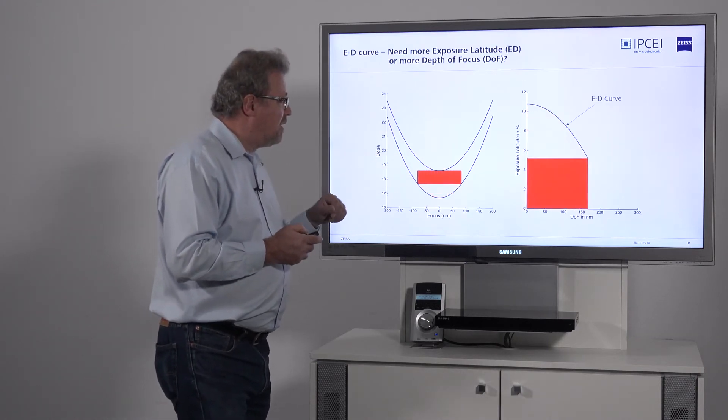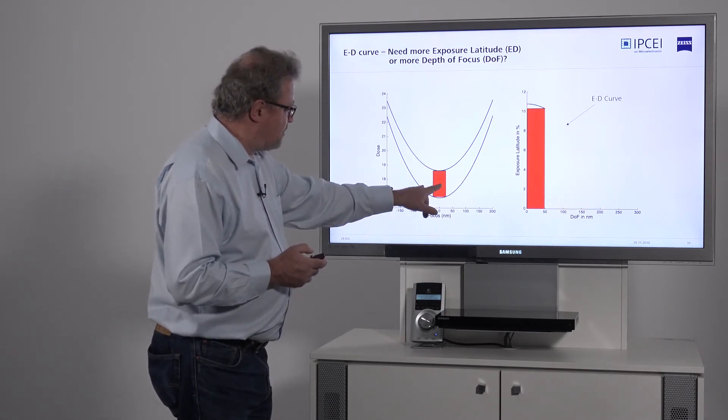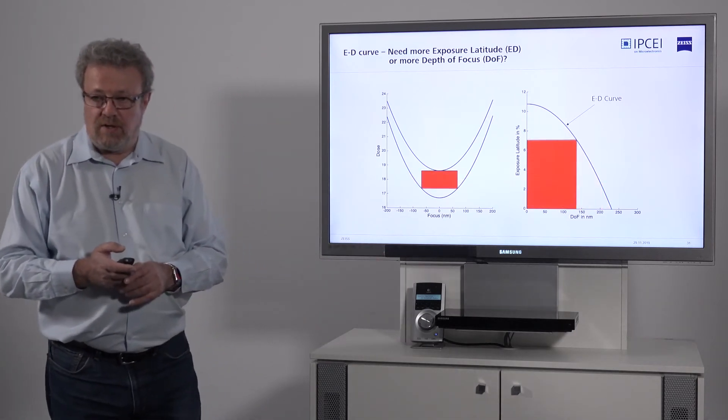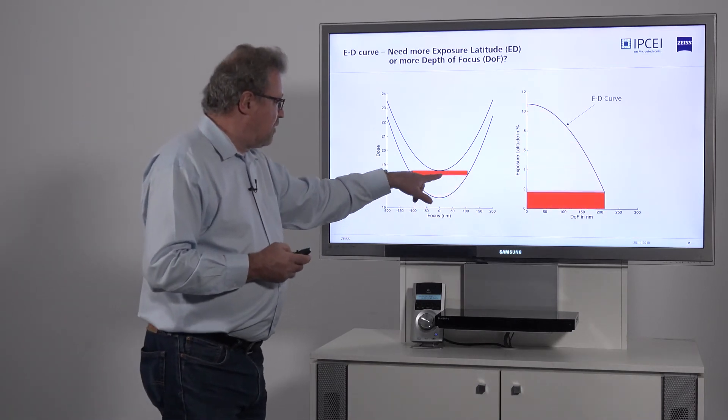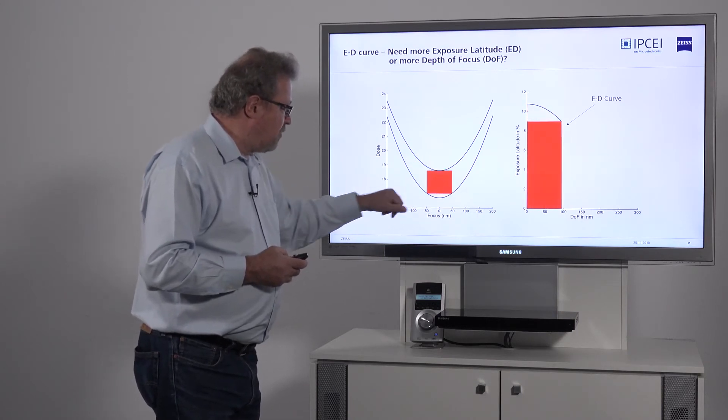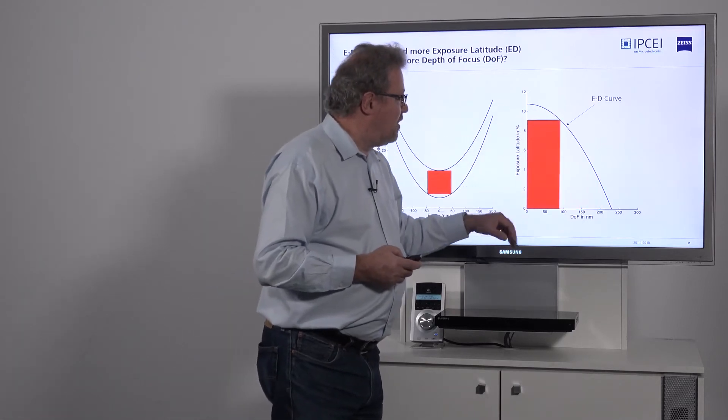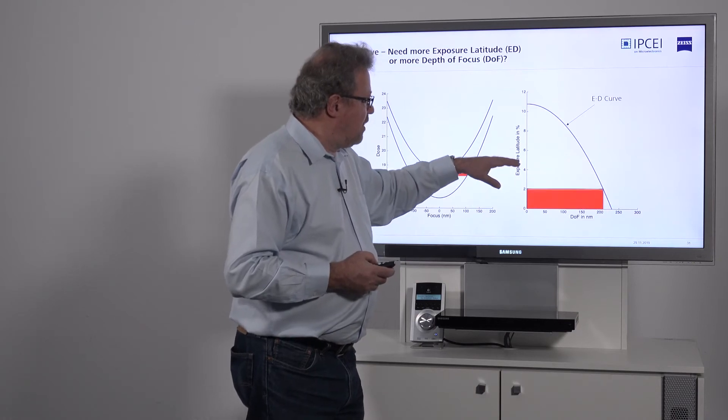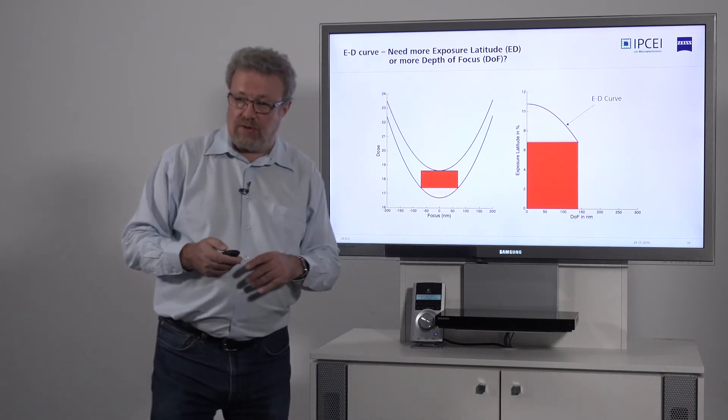We've just seen this on the previous graph, but it also shows you can choose which quantity is more important to you. If you need a larger dose range, you have a smaller focus range and vice versa. This is the so-called ED curve that helps you understand how required exposure latitude and depth of focus work together.